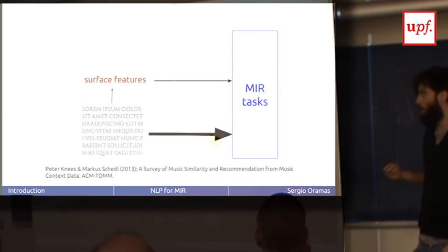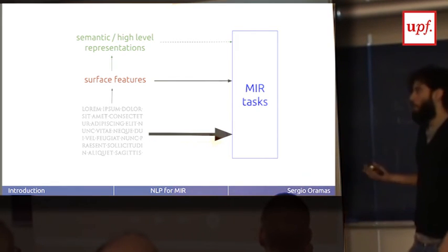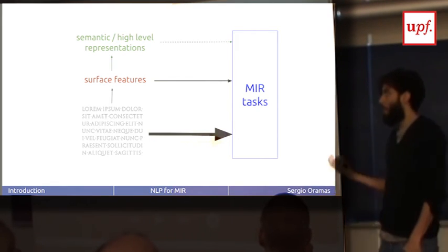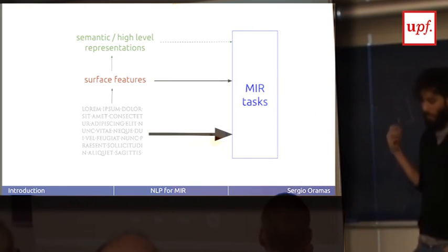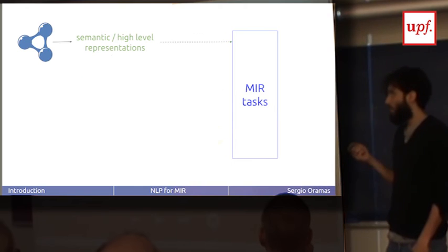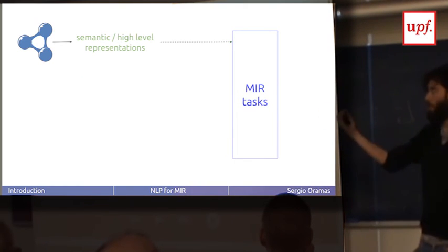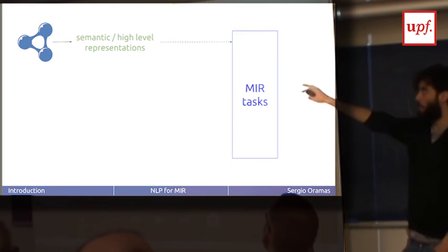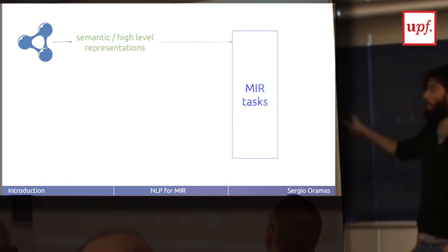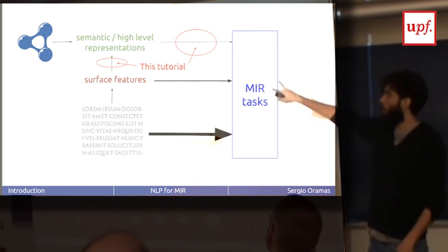What we propose is that we can also get high-level features from text. In the same way as with audio, we can get semantics from the text and use these high-level semantic representations in tasks. These semantic representations can also come from the semantic web, and there has been some research in MIR using the semantic web as a representation. This tutorial is focused on both of these aspects: how to get high-level features from text and how to exploit them in MIR.